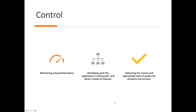The fourth function is control. Control involves monitoring your actual performance, then identifying what the organization is doing well and what it needs to improve on. Control is the managerial function that delivers the chosen and appropriate level of quality of your products or services in the marketplace. While it may not seem spectacular, it is a very crucial activity and function for managers to perform on an ongoing basis.